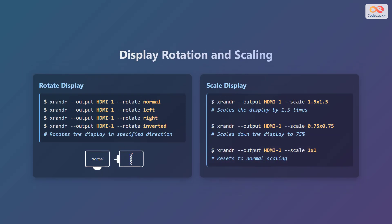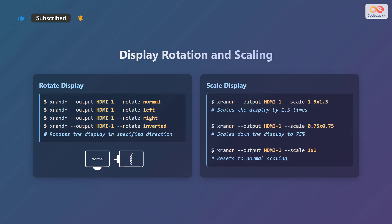xrandr also provides options to rotate and scale your displays. To rotate a display, use the --rotate option followed by the desired rotation: normal, left, right, or inverted. This is useful for different monitor orientations. You can also scale the display using the --scale option followed by the scaling factor in the X and Y dimensions. For instance, 1.5x1.5 will scale the display to one and a half times its original size. To return to normal scaling, use 1x1.